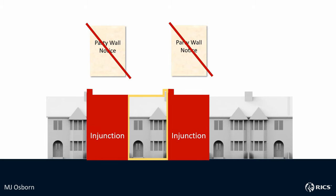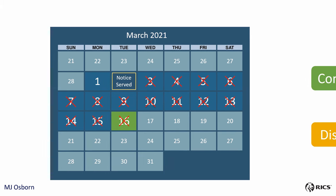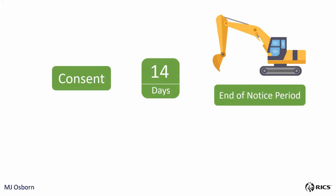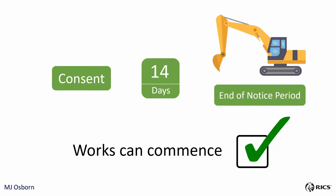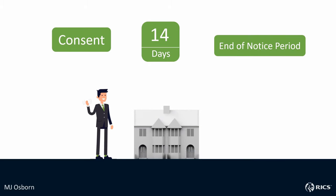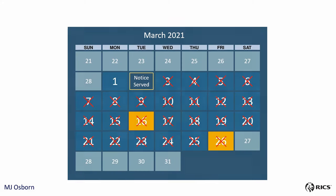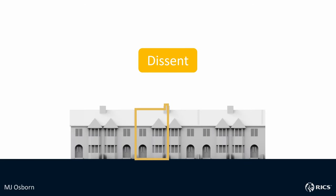An injunction could result in delays and additional costs. Following a served notice, the adjoining owners will have 14 days to consent or dissent. If they consent, works can commence at the end of the notice period, or earlier through agreement. In this case, it is still recommended to appoint a surveyor to record the condition of the party wall or structure so that any damage caused by the works is noted fairly and can be rectified.